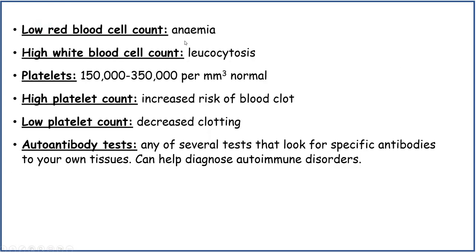If there is a low red blood cell count, it could indicate anaemia. A high white blood cell count is called leukocytosis, because white blood cells are also known as leukocytes. For platelets, 150,000 to 350,000 per cubic millimetre is normal. A high platelet count means there is an increased risk of a blood clot, and a low platelet count means there is decreased clotting.